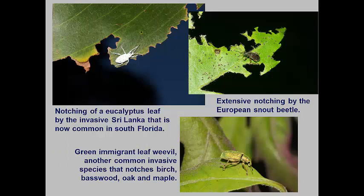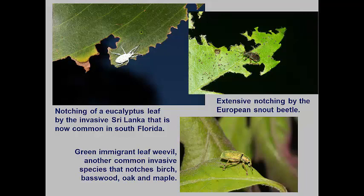Over the last few decades, numerous European and Asian leaf-feeding weevils have been introduced into North America. One of the more recent species is the Sri Lanka weevil that is notching dozens of different species of trees in Florida. The European snout weevil and green immigrant weevil are two other common species now found over most of northern North America. At present, the adult notching of landscape trees and shrubs can become quite extensive, but little damage from the larvae that feed on plant roots has been detected. Most of these are considered to be aesthetic pests, and most homeowners miss them.